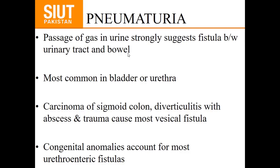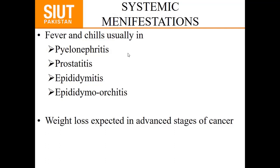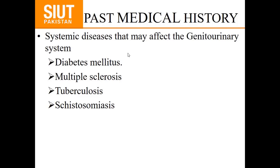Systemic manifestations of urologic symptoms: ask about fever and chills, which are usually present in pyelonephritis, prostatitis, epididymitis, and epididymoorchitis. History of weight loss is present in advanced stages of cancer. Past medical history — systemic diseases that most affect the genitourinary system include diabetes mellitus, tuberculosis, multiple sclerosis, and Schistosoma haematobium.